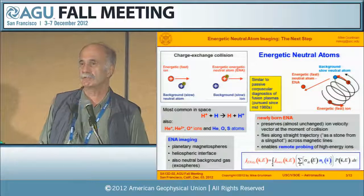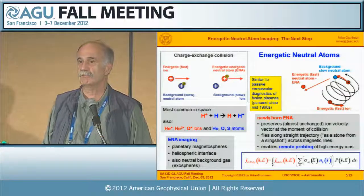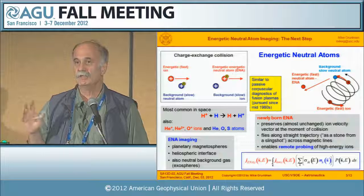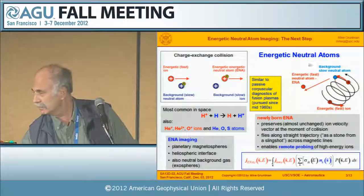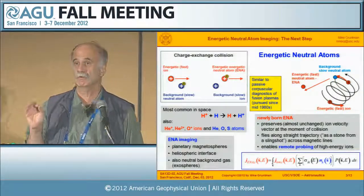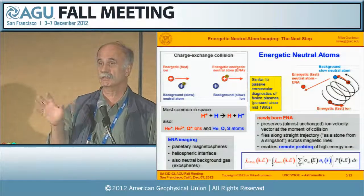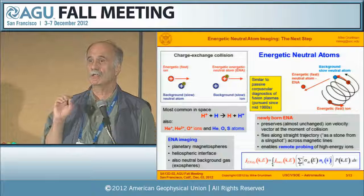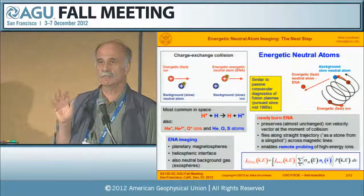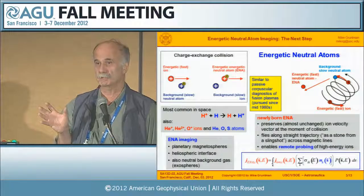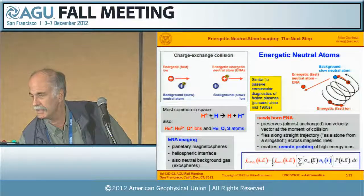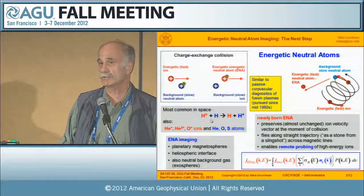Energetic neutral atoms are produced in charge exchange collisions. When an energetic ion collides with a neutral atom and charge exchange occurs, the neutral atom preserves the velocity of the ion and flies across the magnetic field lines like a stone from a slingshot. This allows you to remotely probe, image, and study the populations of energetic ions — similar in some sense to passive corpuscular diagnostics of fusion plasmas pursued since the 1960s. The most common species in space is obviously hydrogen — protons and hydrogen atoms — but other species are also involved.